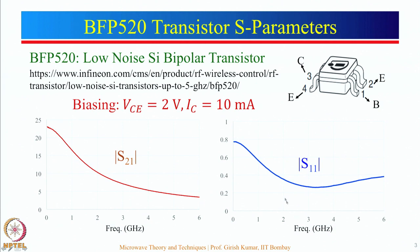Now let us look at the S11 plot. At lower frequencies, S11 is very poor. If S11 equals 0.8, recall that the reflection coefficient equals S11 = 0.8, so reflected power equals 0.64 — meaning 64% of power will be reflected back. So one should really do something at this particular frequency. If we want to use this transistor at lower frequencies, we must try to optimize the input impedance. At around 3 to 4 GHz, the reflection coefficient is relatively less than 0.3, which corresponds to reflected power of about 10%.